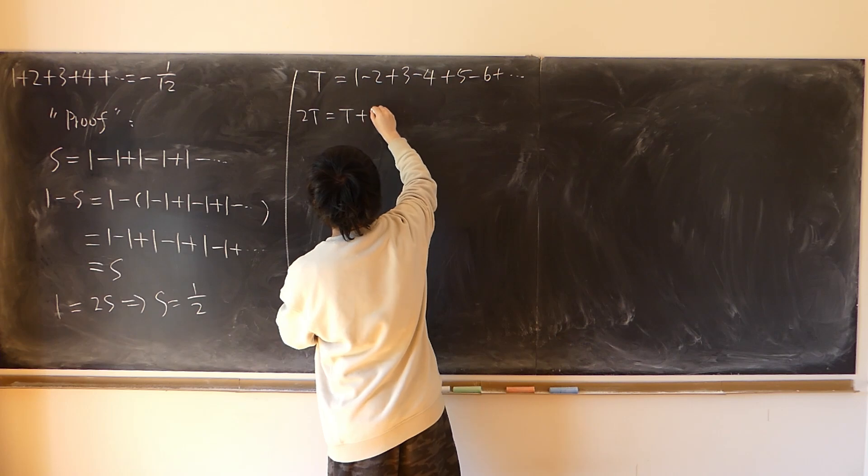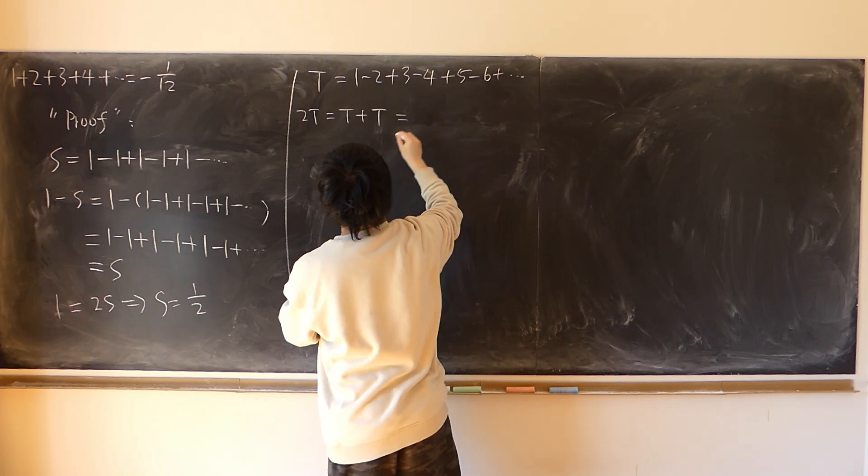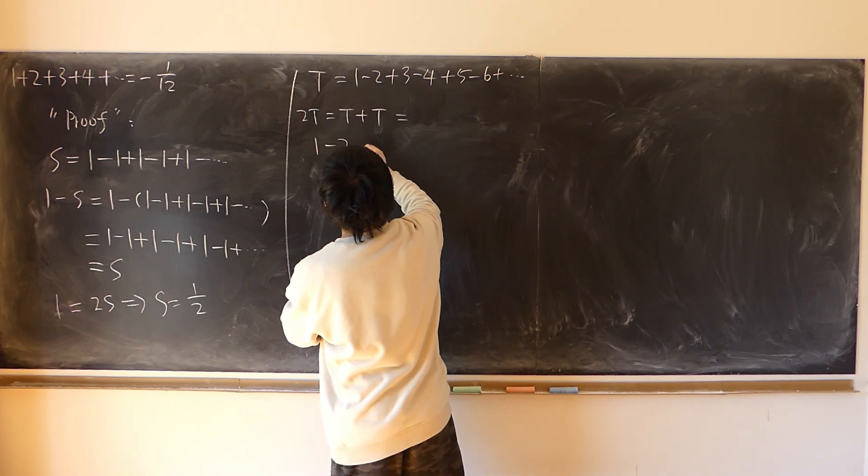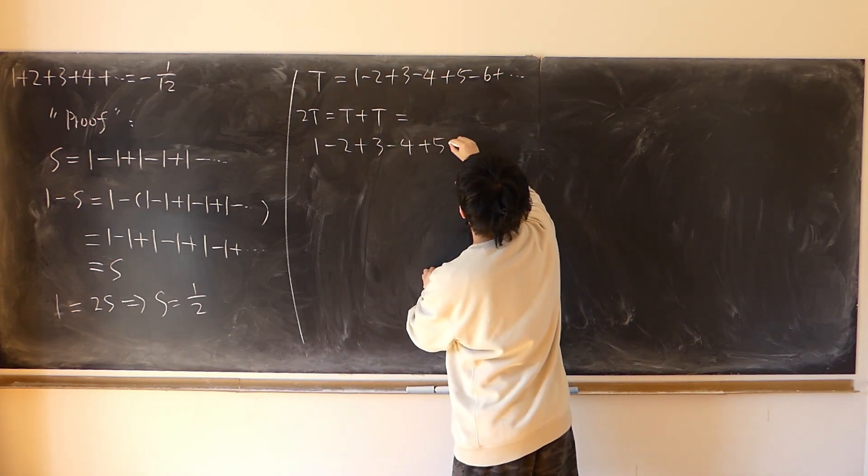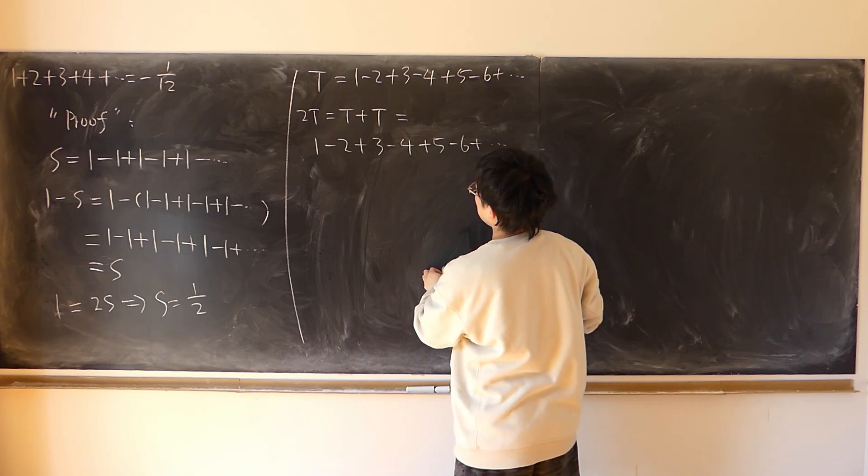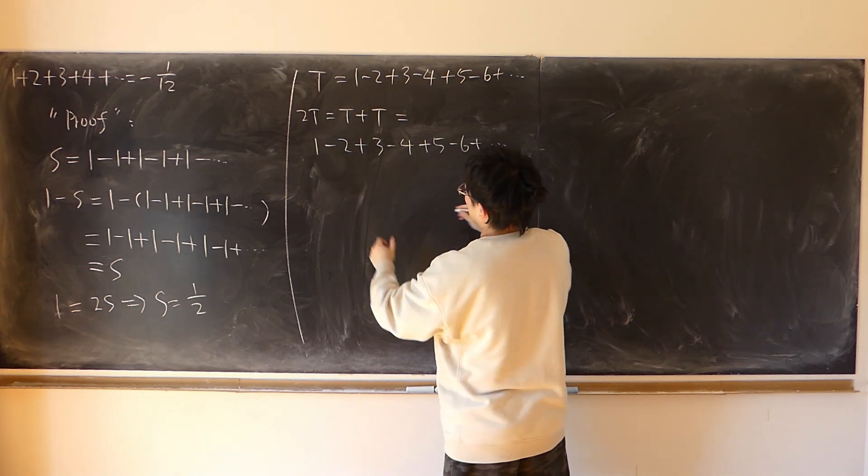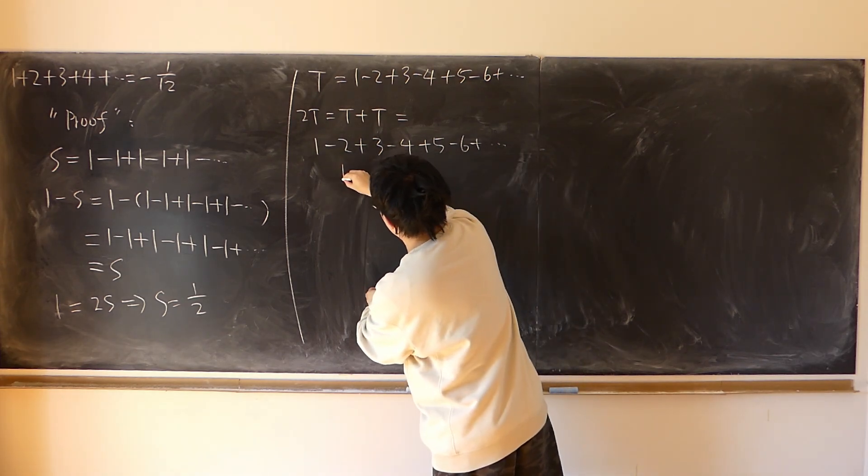2t is equal to t plus t. That is equal to 1 minus 2 plus 3 minus 4 plus 5 minus 6. Like I said, plus the same thing.